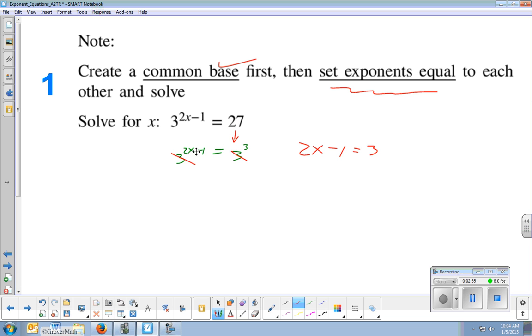Well, 2x minus 1 is on the left, and 3 is on the right. So common base, you set your exponents equal to each other. Now I solved this very easy question. Add 1 is 4 and divide x equals 2.